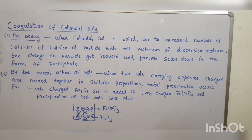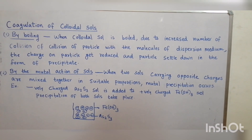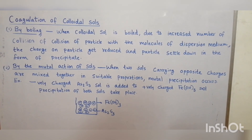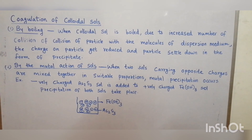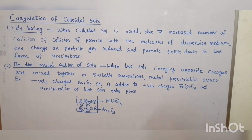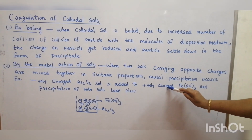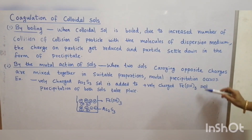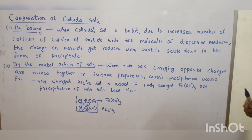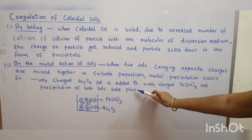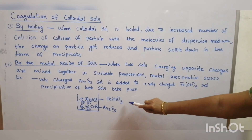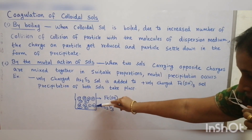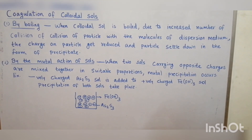Second method: by the mutual action of sols. When two sols carrying opposite charges are mixed together in suitable proportions, mutual precipitation occurs. For example, when negatively charged arsenic sulfide sol is added to positively charged ferric hydroxide sol, the charges get cancelled or neutralized and the precipitation of both sols takes place.